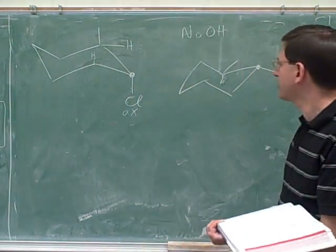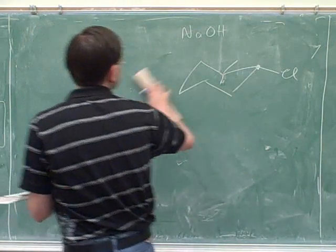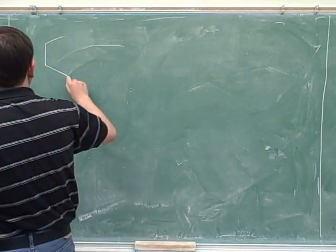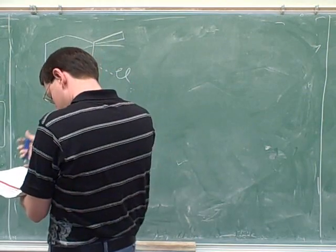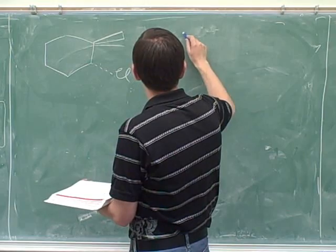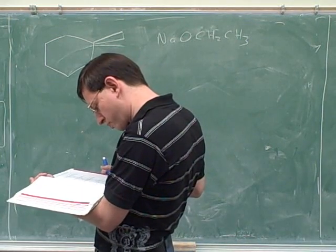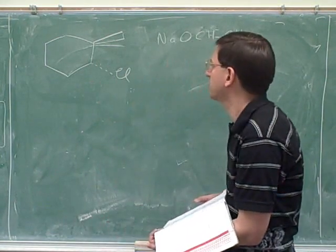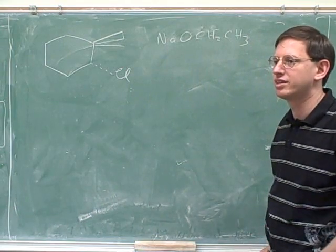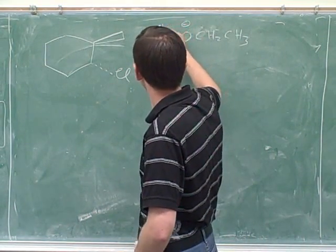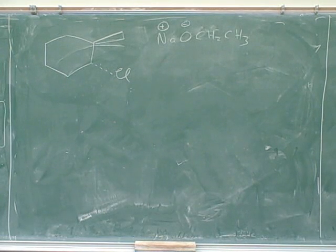That was the big lesson of this question. Now we can use that to get the answers to C and D. The question is to predict the product. We would expect an E2 again because we've got a secondary substrate and a strong base. So let's identify the beta carbons and the beta hydrogens.